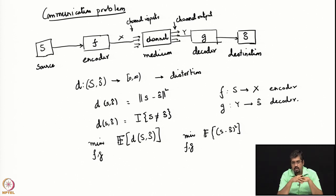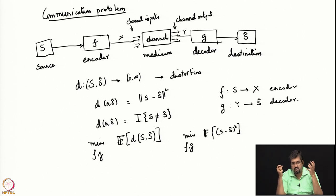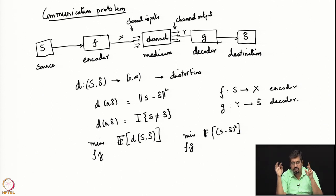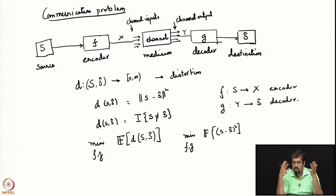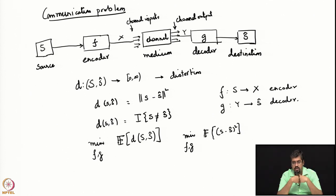It is clear that this is a stochastic decision problem. After all, there is a random variable s, there is an encoder and a decoder — these are functions mapping random variables to what you can call actions. Based on those actions we receive a cost, and the cost is encoded in this function d. The typical communication setup is really a stochastic decision problem, although that is not how it is normally studied.